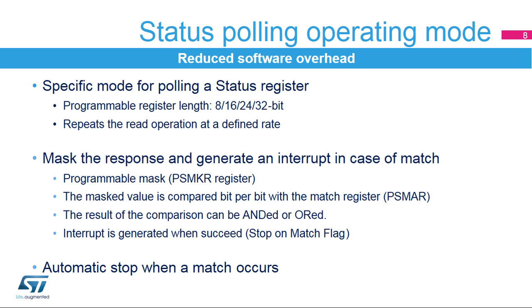The Quad SPI interface can be configured to periodically read a register in the external flash memory. The return data can be masked to select the bits to be evaluated, and the selected bits are compared with their required values stored in the match register. The result can be treated in two ways: in ANDED mode, if all the selected bits are matching, an interrupt is generated; in ORD mode, if one of the selected bits is matching, an interrupt is generated. When a match occurs, the Quad SPI interface can stop automatically.